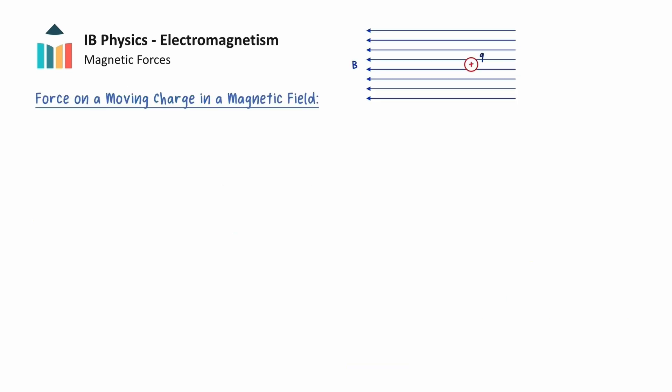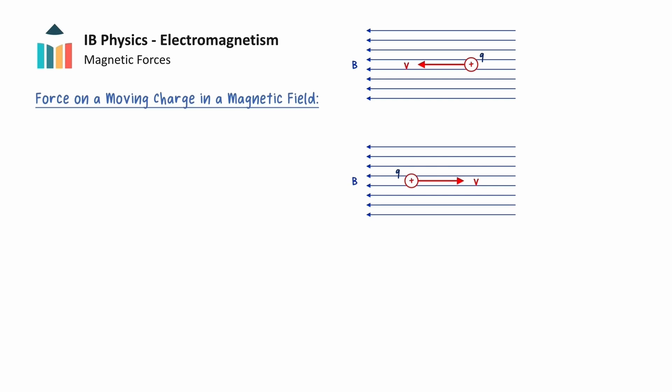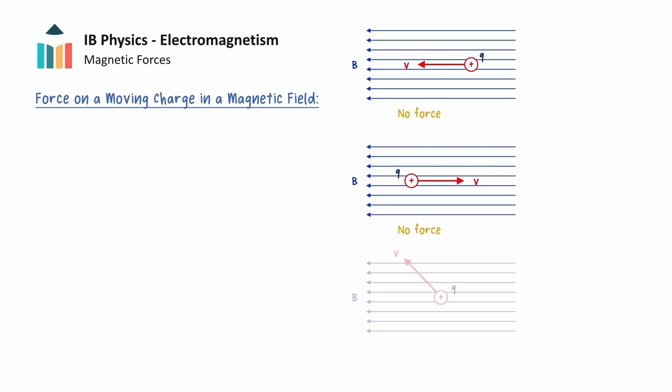Let's begin by considering the motion of a charged particle in an external magnetic field. If the charged particle has a velocity that is parallel to the direction of the field, then the charged particle will not experience any magnetic force from the magnetic field. However, if the charged particle moves in any other direction that is not parallel to the magnetic field, it will experience a force that depends on several quantities.